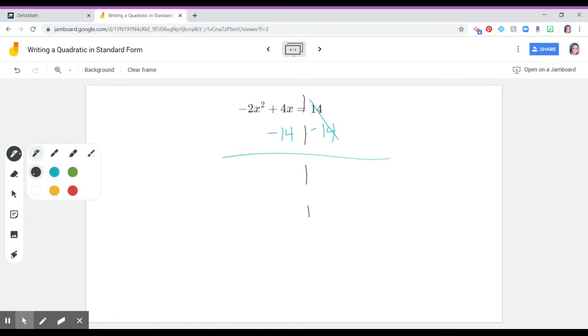So I'll get equals zero. But then I can't subtract 14 from 2x squared, they're not like terms, or from 4x. So what's actually going to happen is I'm going to write negative 2x squared plus 4x and then minus 14.